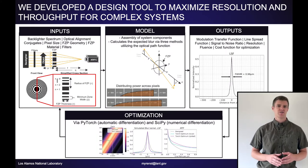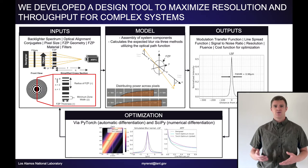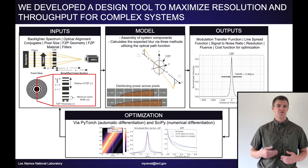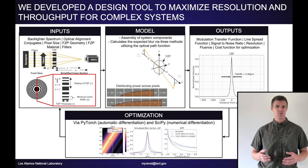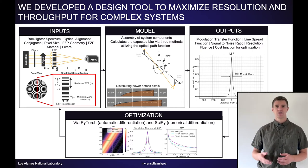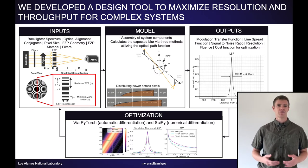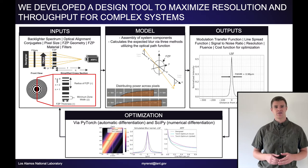These challenges motivate our design tool. Our design tool is implemented in Python and features a model and an optimization architecture. The inputs to the model are the many components of the system: the FZP geometries, the optical alignment conjugates, the backlighter spectrum, and much more. Then the model computes the expected blur of the system and produces an output of interest, like a line spread function or a cost function.